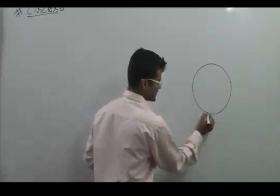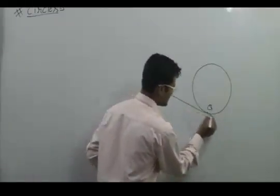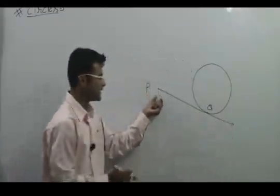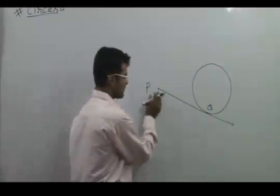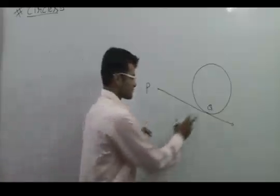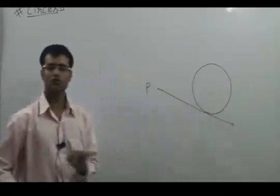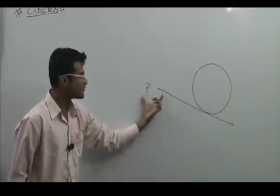As P is an external point for the circle and Q is the point of contact, we can draw only a single tangent through this P and Q. We can draw only a single tangent to the circle through this external point.